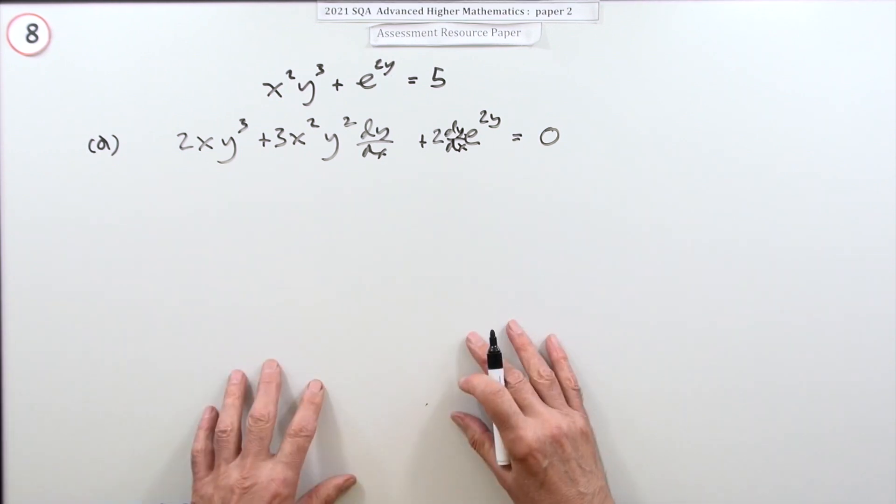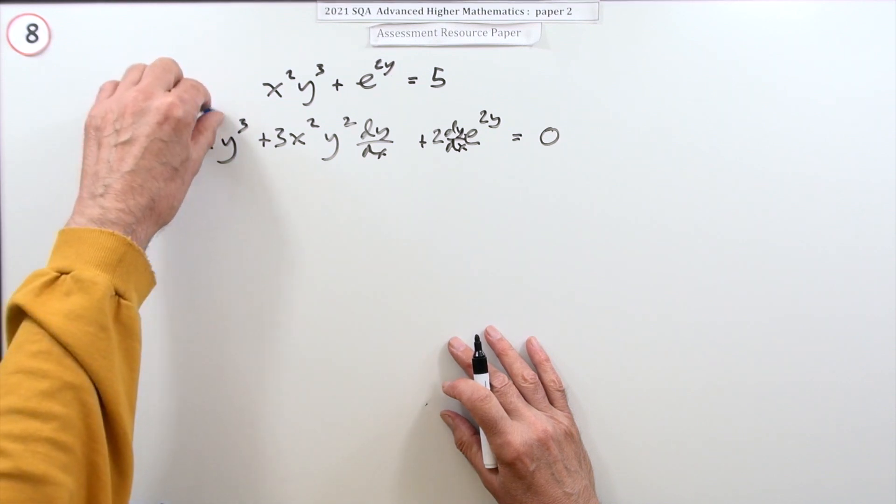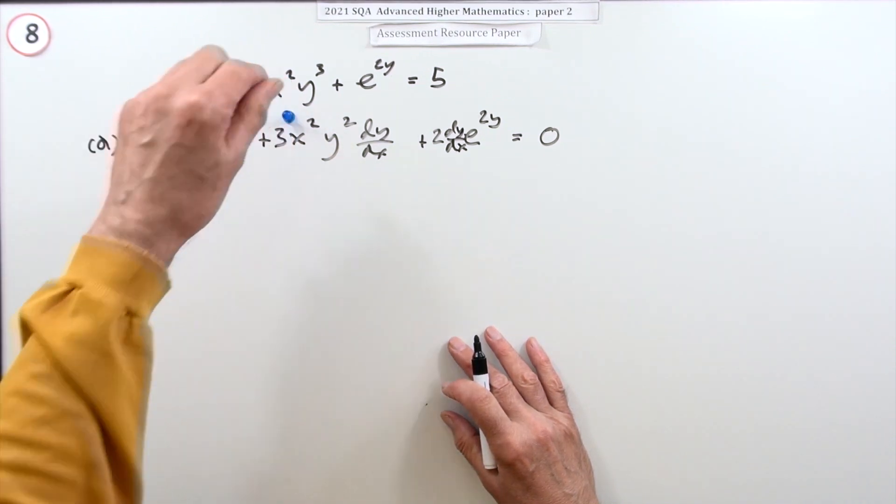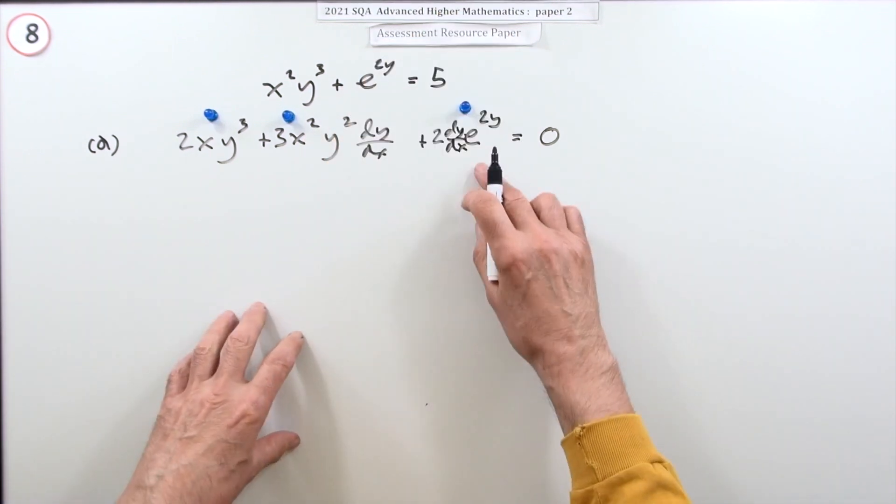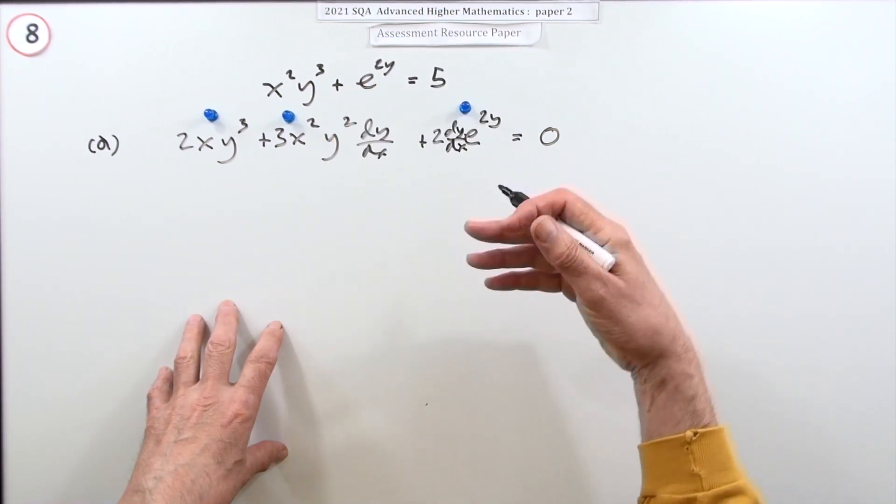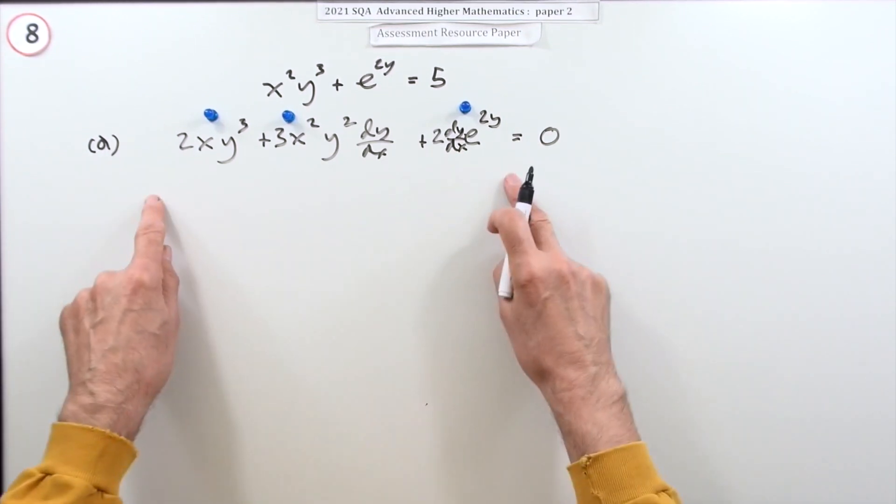Now you actually get three marks for this - they'll give a mark for each job. You get a mark for one part of the product, a mark for the other part of the product, and a mark for the exponential term. But I've still got to gather it all up because there's two types of terms: terms with dy/dx - that's what I really want - gather them together.